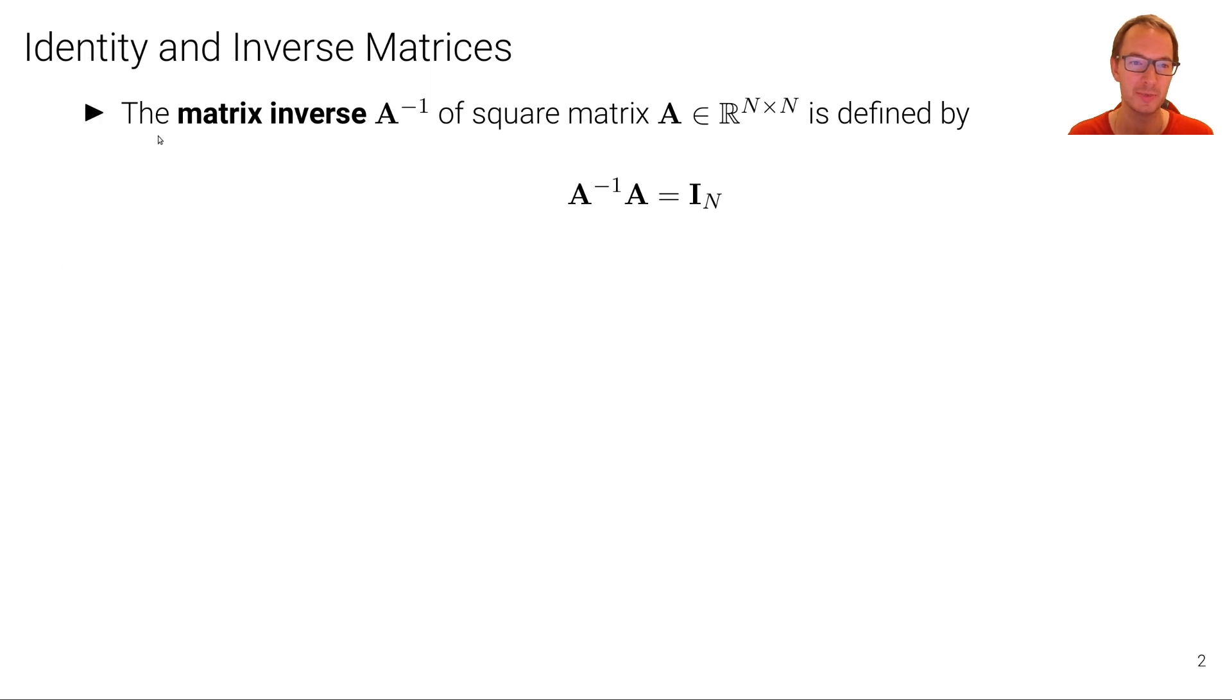Now the matrix inverse, which we denote by A to the power of minus one, the matrix inverse of a square matrix, is defined through the identity matrix, such that if I multiply A inverse with A itself, I obtain the identity matrix. I obtain the identity element through this multiplication.